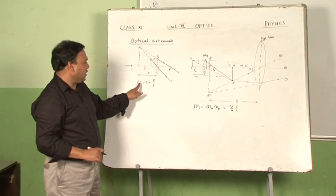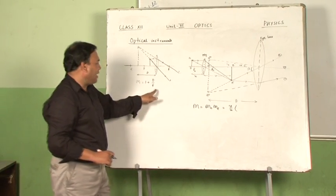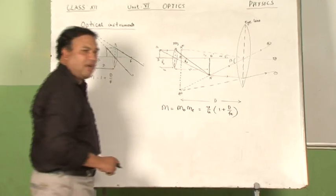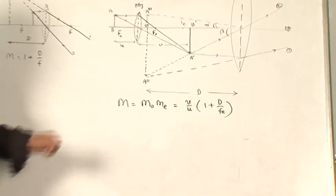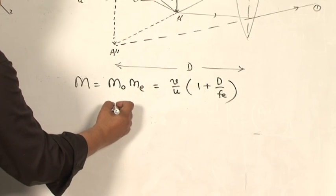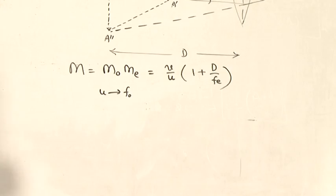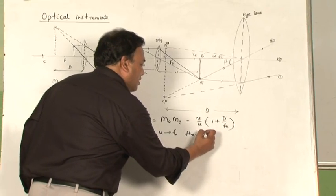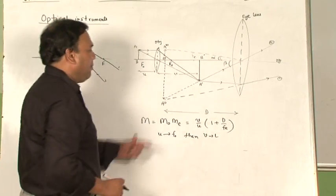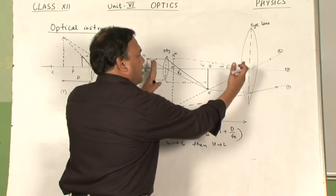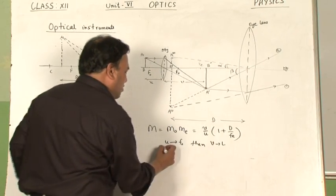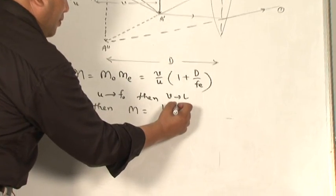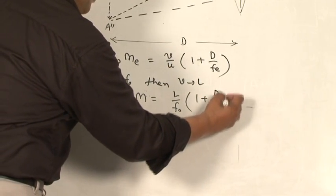m-e is the magnifying power of the eye lens, which is exactly working as a simple microscope. As we have already studied, the magnifying power is 1 plus D by f, therefore I write 1 plus D upon f-e. So the magnifying power of the compound microscope is m = (v/u) × (1 + D/fe). Suppose the object is placed very close to the focus of the objective lens, meaning as u tends to f-o, then v tends to l - the final image distance will be approximately equal to the distance between the two lenses. In this case, m becomes l upon f-o multiplied by 1 plus D by f-e.